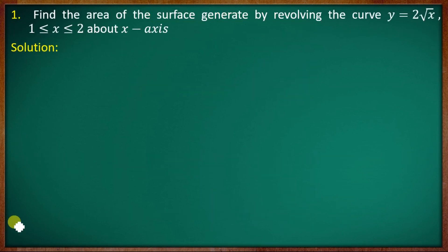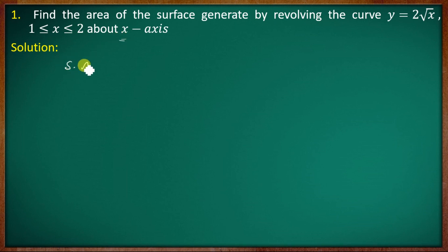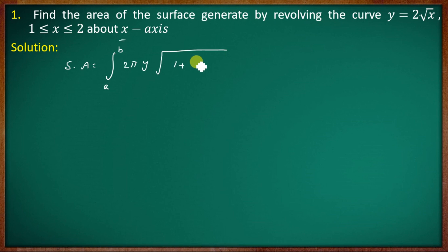First question: find the area of the surface generated by revolving the curve y = 2√x, where 1 ≤ x ≤ 2, about the x-axis. The formula is: surface area = integral from a to b of 2π y · √(1 + (dy/dx)²) dx.